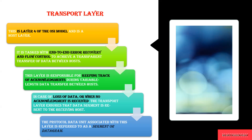Only after receiving an acknowledgement does the layer keep transferring data. If no acknowledgement is received, it assumes the transmitted data has failed to reach the destination. In case of data loss, it will send a duplicate of the data segment to ensure it reaches the destination node. The data unit used in the transport layer is called a segment or datagram.